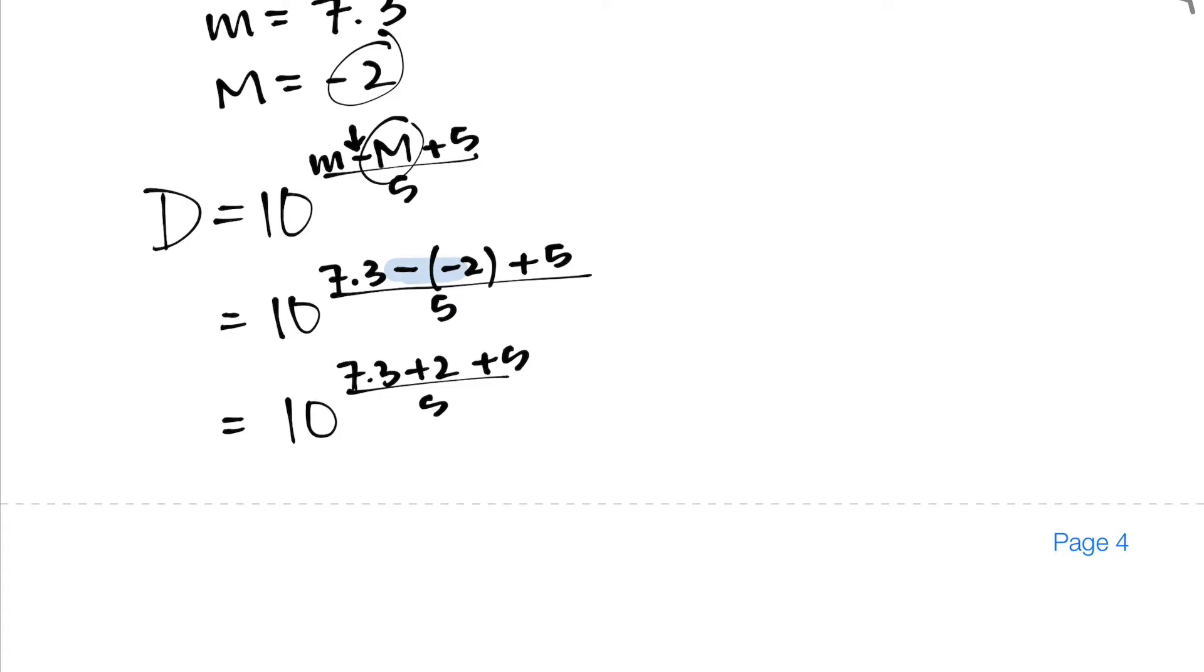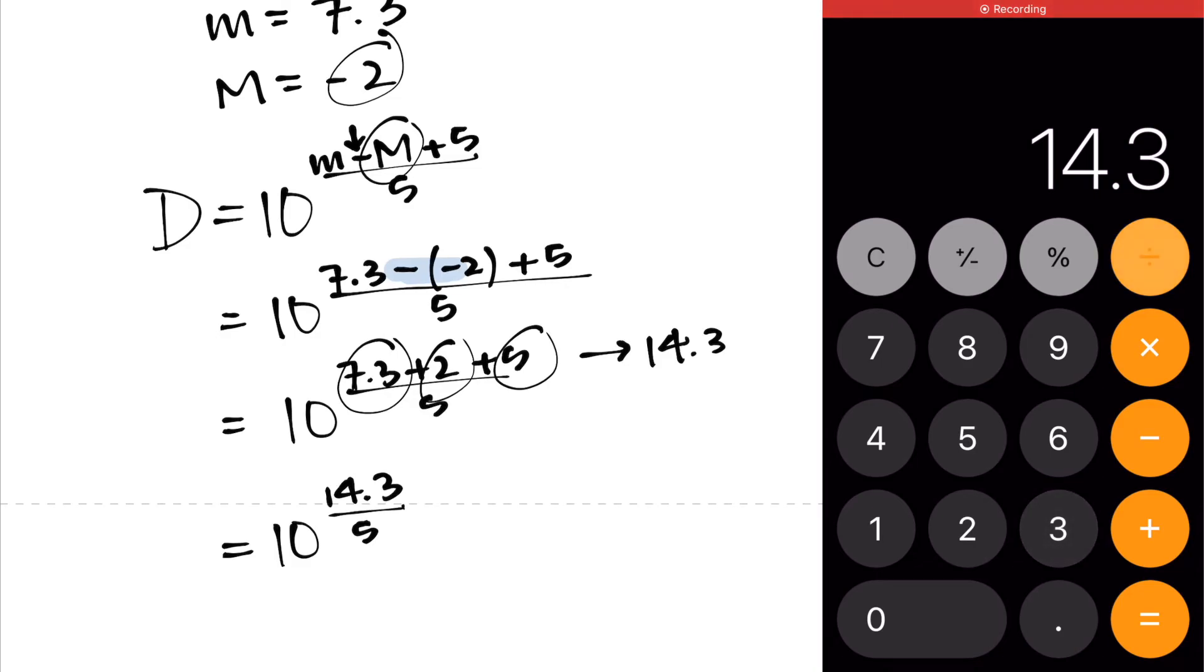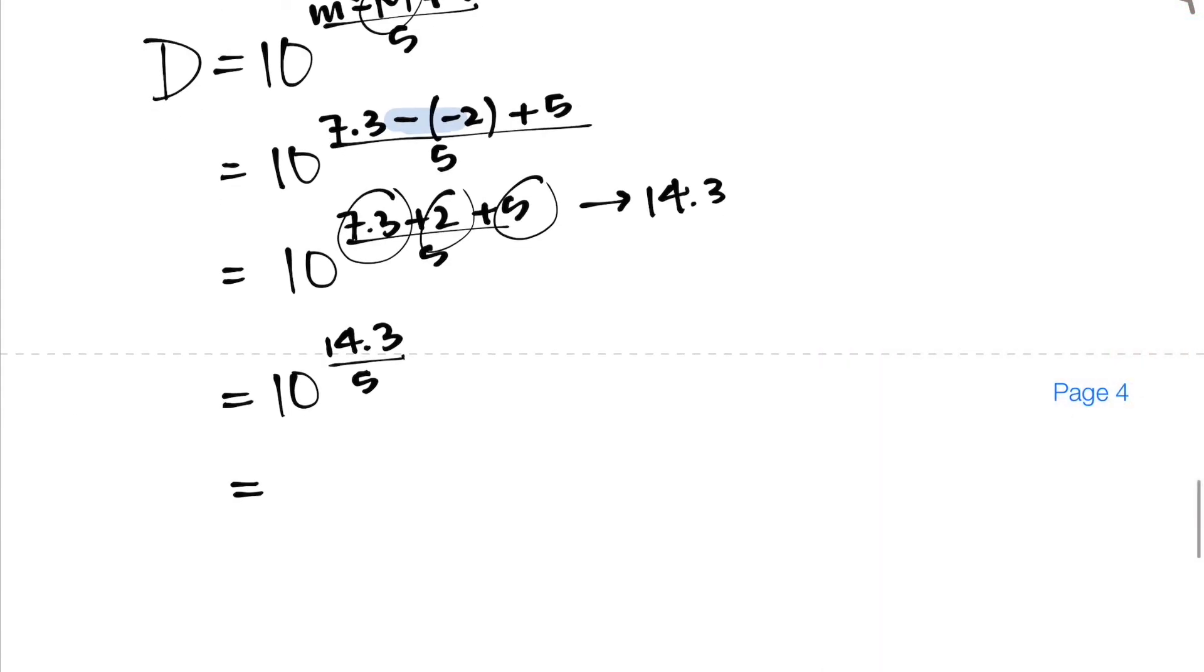So now that we have this funky looking thing, we can go ahead and figure out how to simplify that entire exponent. So we can look at it this way: 5 plus 2 is 7, so 7 plus 7.3 is going to give me 14.3, and that's just going to be the number that I'm putting at the top of my exponent, or at top of the fraction in the exponent. So I have 10 to the power of 14.3 divided by 5. So 14.3 divided by 5 should give me 2.86. So now my expression is 10 to the power of 2.86.